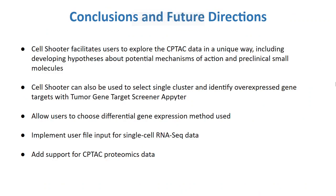In summary, Cell Shooter facilitates users to explore the CPTAC data in a unique way, including developing hypotheses about potential mechanisms of action and preclinical small molecules. Another feature of the site is to select a single cluster of samples and, rather than performing differential gene expression, pass the RNA-seq data to identify overexpressed gene targets using the tumor gene target screener Apitor. In the future, we can implement additional features such as allowing the user to choose the algorithm used for differential gene expression, a file input feature for users to visualize and analyze their own RNA-seq data, and support for proteomics data from CPTAC.